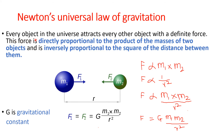Listen carefully. I am reading the law: Every object in the universe attracts every other object with a definite force. This force is directly proportional to the product of masses of the two objects, and is inversely proportional to the square of the distance between them.